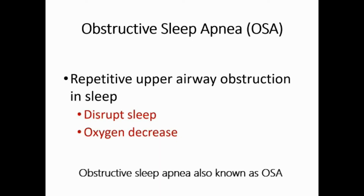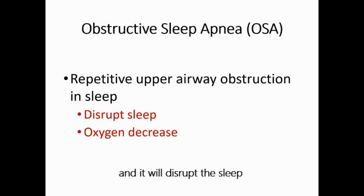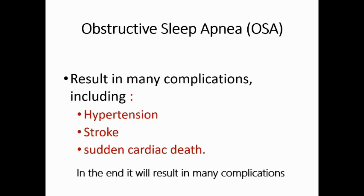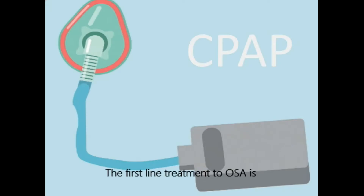Obstructive sleep apnea, also known as OSA, is a common disease. It is caused by repetitive upper airway obstruction during sleep, which disrupts sleep and causes oxygen level decrease. In the end, it results in many complications, including uncontrolled hypertension, stroke, and sudden cardiac death. The first-line treatment for OSA is continuous positive airway pressure, also known as CPAP.